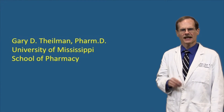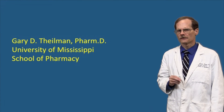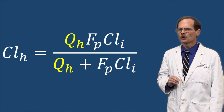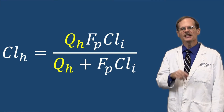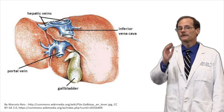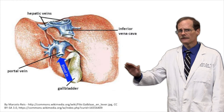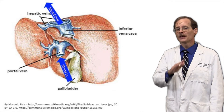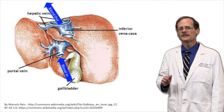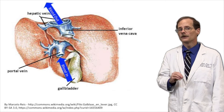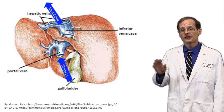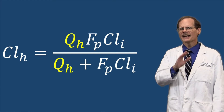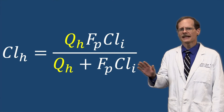Let's look into more factors that affect how quickly the liver can clear drug from the body using the well-stirred model. This time we're going to explore hepatic blood flow, represented in the equation as Q sub H. If drug molecules don't get into the liver, they aren't going to get cleared by the liver. So how quickly blood is flowing through the liver influences the number of drug molecules present at any given time and subject to elimination. However, hepatic blood flow doesn't always make a lot of difference.